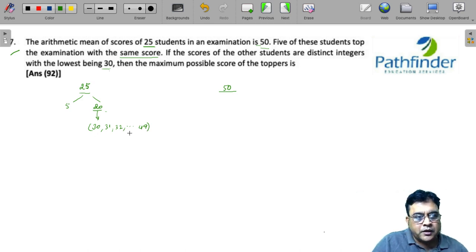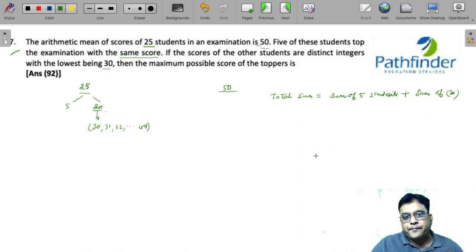Now the total sum must be equal to sum of scores of 5 students who are toppers plus sum of remaining 20 students. This is the total sum. What is the total sum? 25 into 50. 25 is the total number of students, 50 is the average.